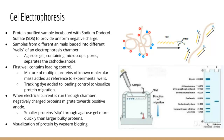Gel electrophoresis is another fundamental technique used to separate proteins, DNA, or RNA by size. As a researcher, the first thing you would need to do is extract and purify your protein from a crude cell lysate. There are about 20 different methods to extract proteins, each designed based on where the protein is located in the cell, what tissue it's extracted from, and what the protein will be used for in subsequent analysis.